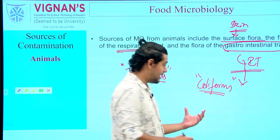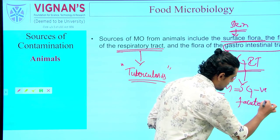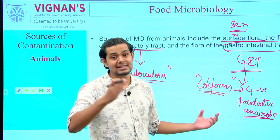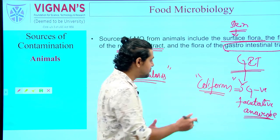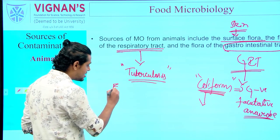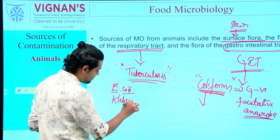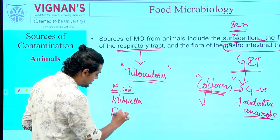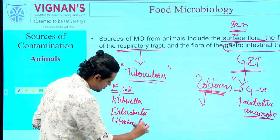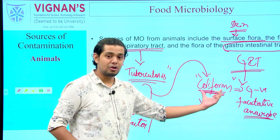When discussing animal contamination, the intestinal microflora is of utmost priority. Coliforms are a group of microorganisms that are gram-negative and facultative anaerobes — meaning they can grow both in the presence and absence of oxygen. The GIT tract effectively harbors coliforms. This coliform group includes four potential microorganisms: Escherichia coli, Klebsiella, Enterobacter, and Citrobacter.